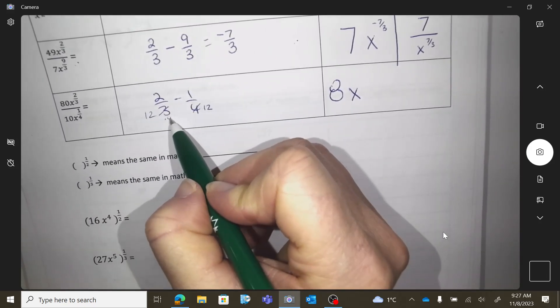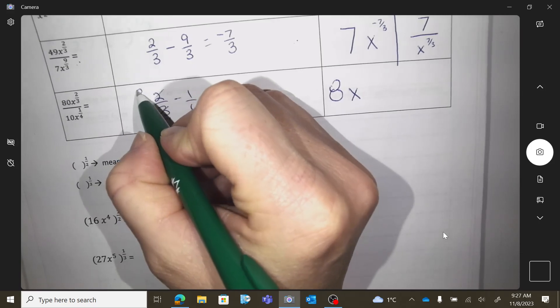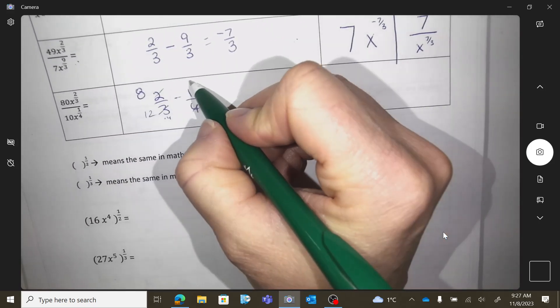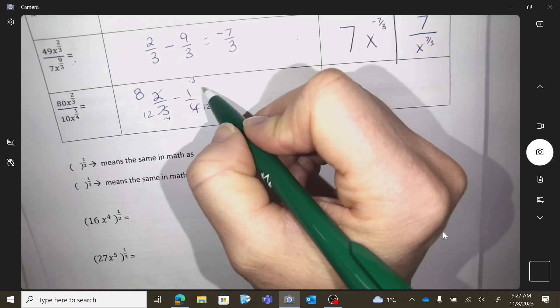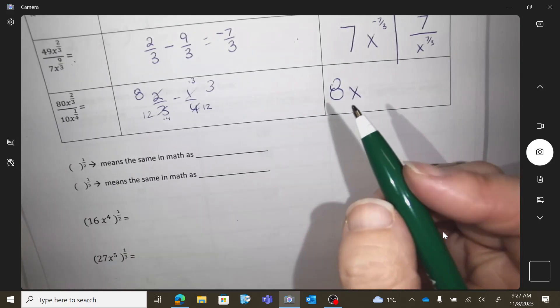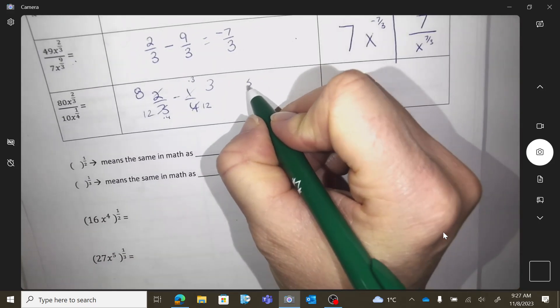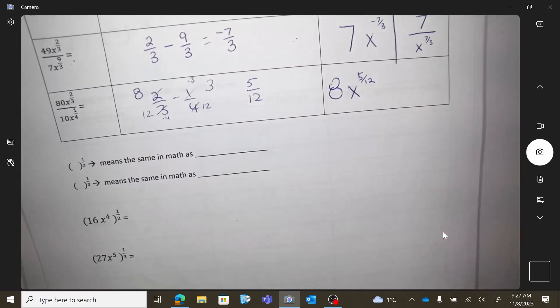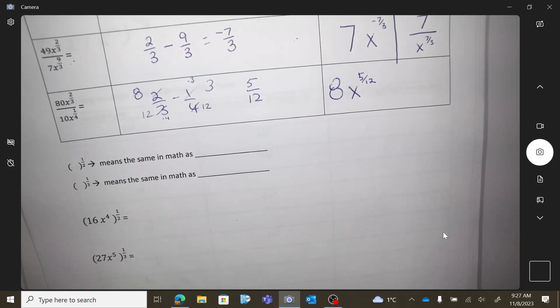So this would get times by 4. So this would turn into an 8. Times by 3. So that would turn into a 3. 8 minus 3 is 5 twelfths. There we go. Okay. So again, you didn't learn anything new. Just make sure you're careful with your math.